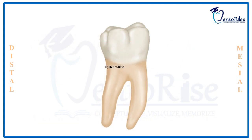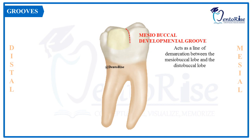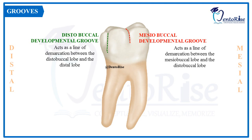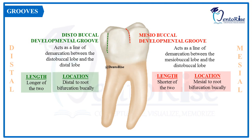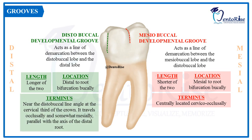The grooves separating the buccal cusps: the meso-buccal and disto-buccal cusps are separated by the meso-buccal developmental groove, while the disto-buccal cusp and distal cusp are separated by the disto-buccal developmental groove. The meso-buccal developmental groove is shorter than the disto-buccal developmental groove. The meso-buccal developmental groove is present mesial to the root bifurcation buccally, while the disto-buccal developmental groove is present distal to the root bifurcation buccally. The terminus of the meso-buccal developmental groove is located centrally cervico-occlusally, while the terminus of the disto-buccal developmental groove is near the disto-buccal line angle of the crown at the cervical third.